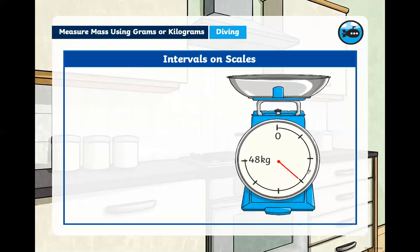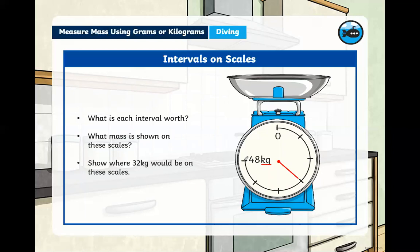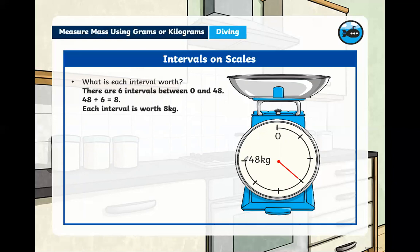Here we have another one. First thing, look at your unit of measurement. What is it this time? It's a K and a G. Do you remember what that stands for? Next, how many intervals do we have? One, two, three, four, five, six. So what is each interval worth? 48 divided by six. Hopefully you've already figured out, 48 divided by six is equal to eight. So in this case, we're going to be using our eight times tables. That would be eight kilograms.